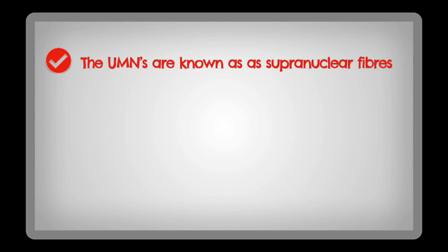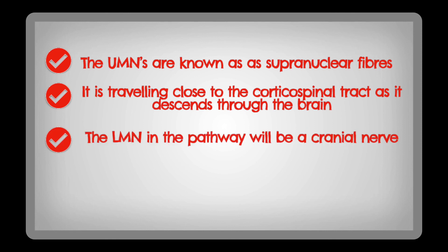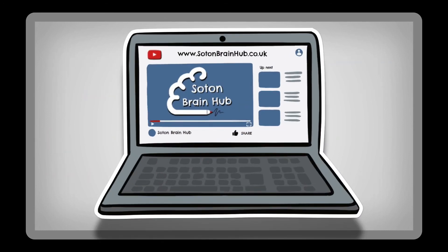To summarize: the upper motor neuron descending from the cortex is also known as a supranuclear fiber, and a supranuclear lesion is the same as an upper motor neuron lesion in this tract. It travels close to the corticospinal tract, so both tend to be injured together. The lower motor neuron in the pathway is a cranial nerve — not all cranial nerves are represented, as not all have motor function. In most cases, each upper motor neuron connects bilaterally to its lower motor neuron cranial nerve nucleus, except for cranial nerves 7, 11, and 12.